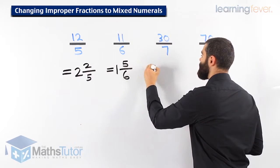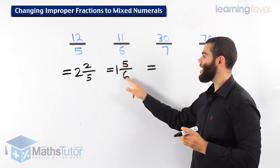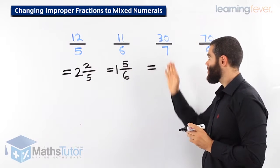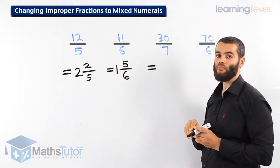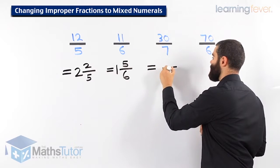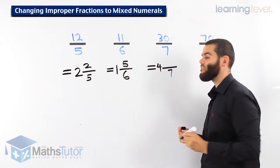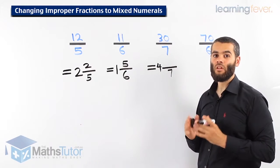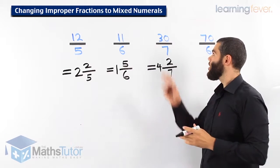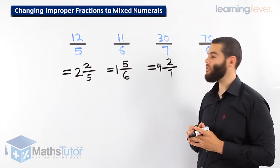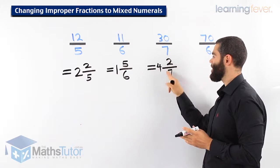30 over 7 is improper. We want to write it as a mixed numeral — a whole number and a fraction. How many 7's go into 30? We need to know our times tables. 4 sevens go into 30 because 4 times 7 makes 28. What's remaining? 2 remaining. 4 times 7 is 28, and we want to go into 30, so there's 2 remaining. That means 7 goes into 30 four times with a remainder of 2, and the denominator stays the same.